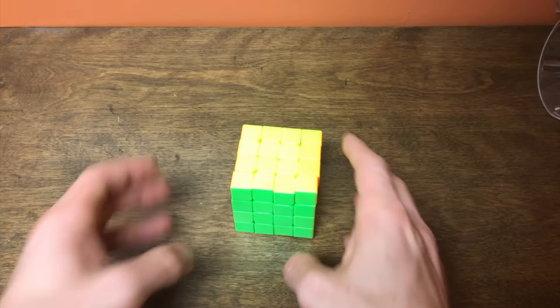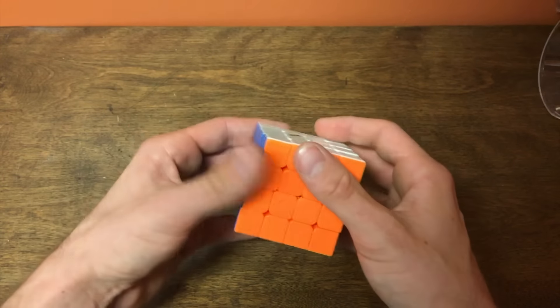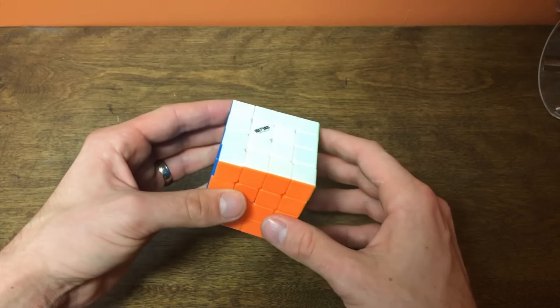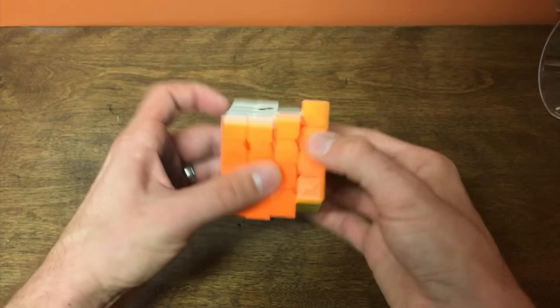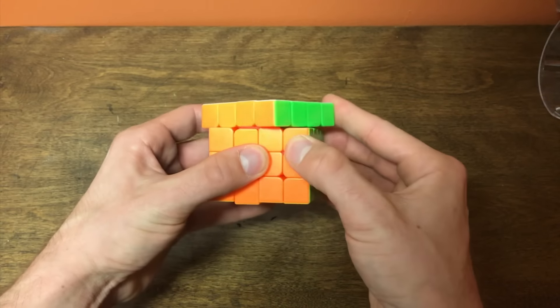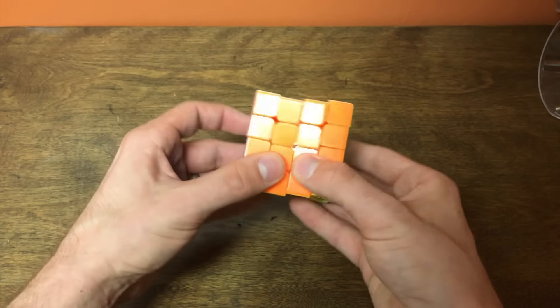So basically this is the Qiyi Wukui Woku 4x4. Someone actually just put it down in the comments section below how to pronounce that. Corner cutting is quite decent, especially middle layers. Middle layers are really nice.